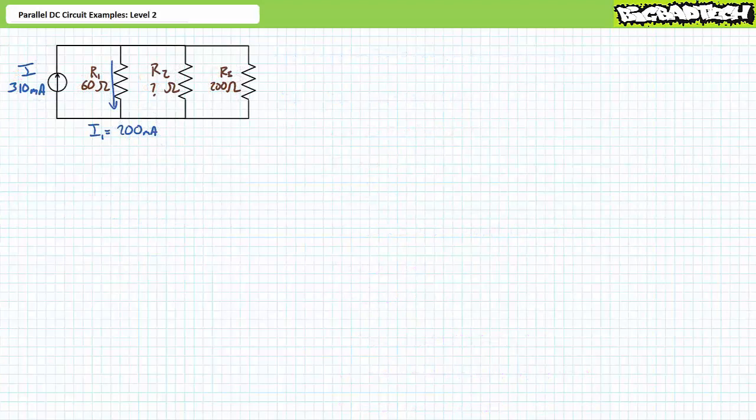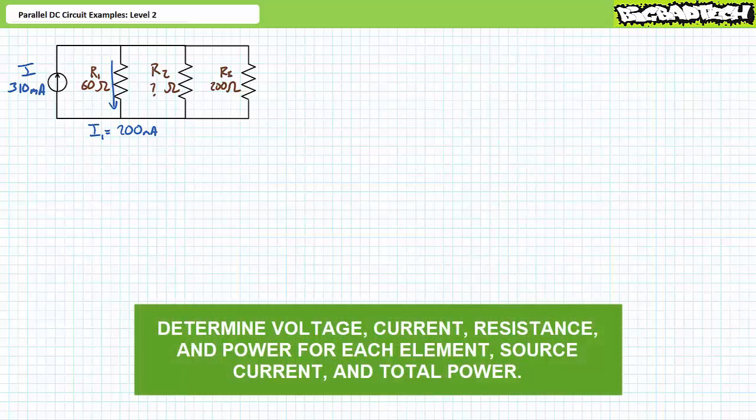Our final illustrated example features a 310-milliamp current source and a parallel combination of R1 (a 60-ohm resistor), R2 (an unknown resistor), and R3 (200 ohms). We additionally know that the current through R1 is 200 milliamps. We're being asked to solve for the voltage drop across each element, the current through each element, the power dissipated by each element, the source current, and the total power. Pause the lecture and try this on your own.